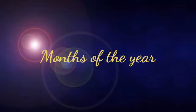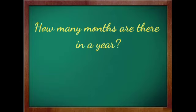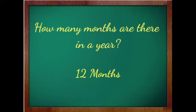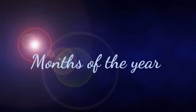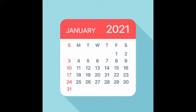Next we see months of the year. Dear students, do you know how many months are there in a year? There are 12 months in a year. Let's see one by one. First one, January. J-A-N-U-A-R-Y, January. January is the first month of the year. It has 31 days.